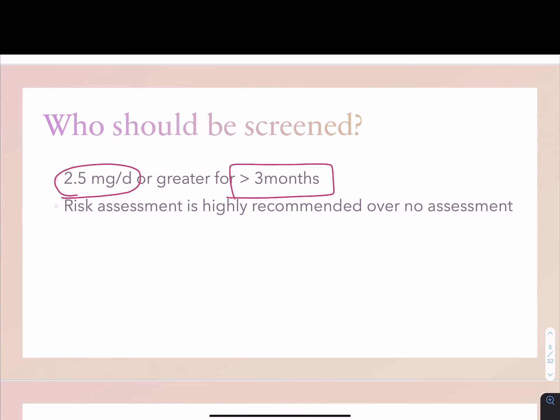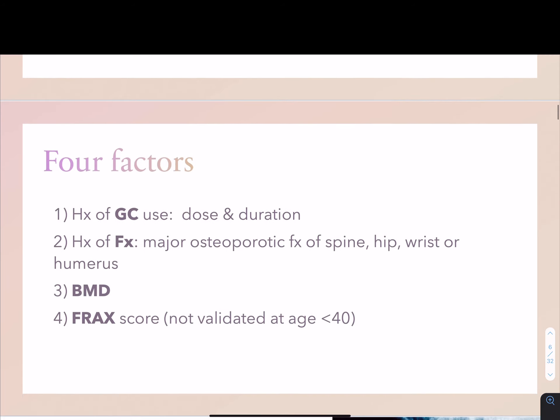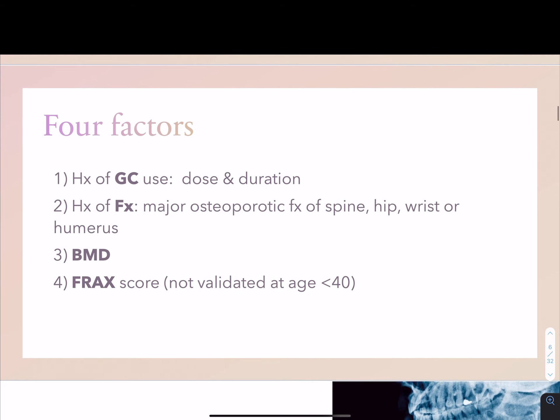Where do you begin your search? Rheumatology cases are complex and time is limited. That's why focusing on four key factors will help streamline your investigation for glucocorticoid-induced osteoporosis. Those four factors are: number one, history of glucocorticoid use; number two, history of fractures; number three, BMD or bone mineral density; and number four, FRAX score.